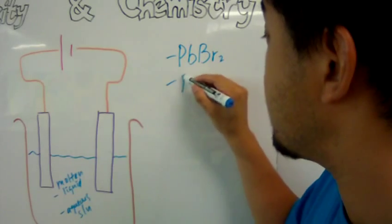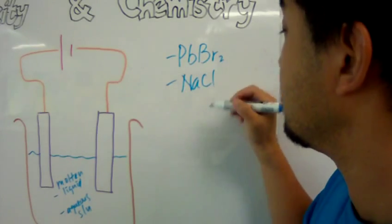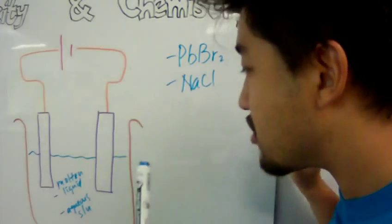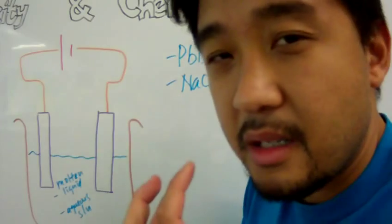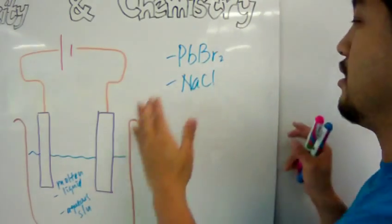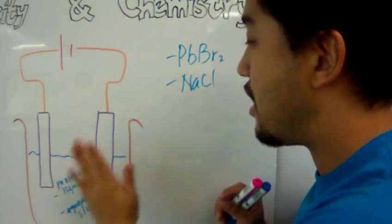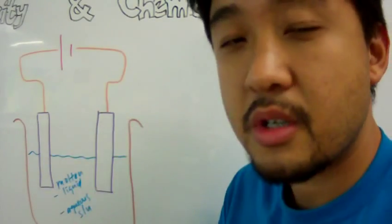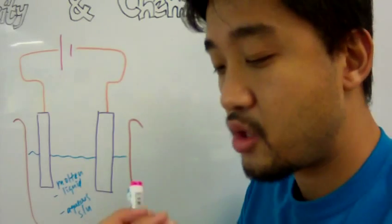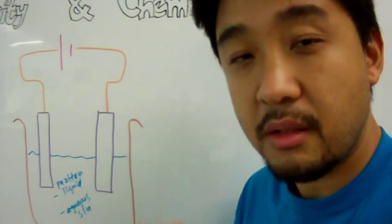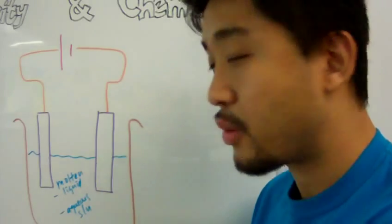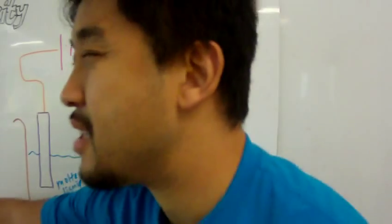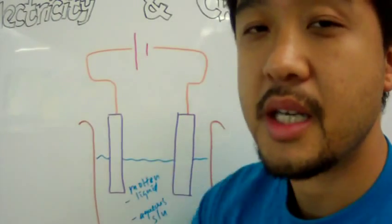The aqueous solution could be a salt, like sodium chloride. Those details do not matter right now. What really matters is that you understand that here you have solid salt that has been melted into a molten liquid, and you have an aqueous solution that means salt dissolved in water.